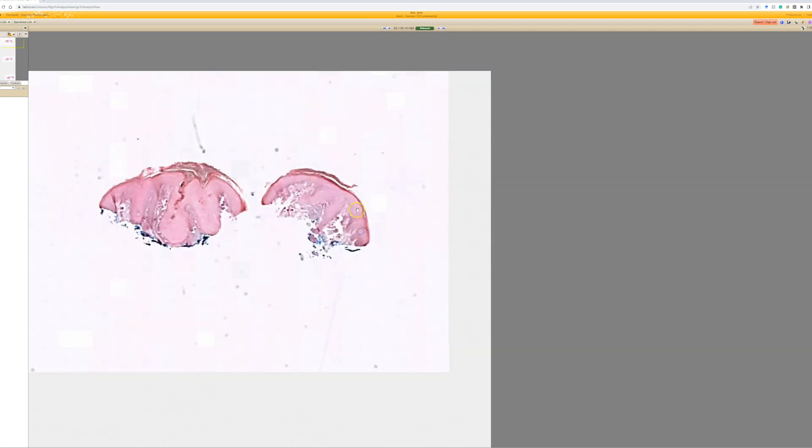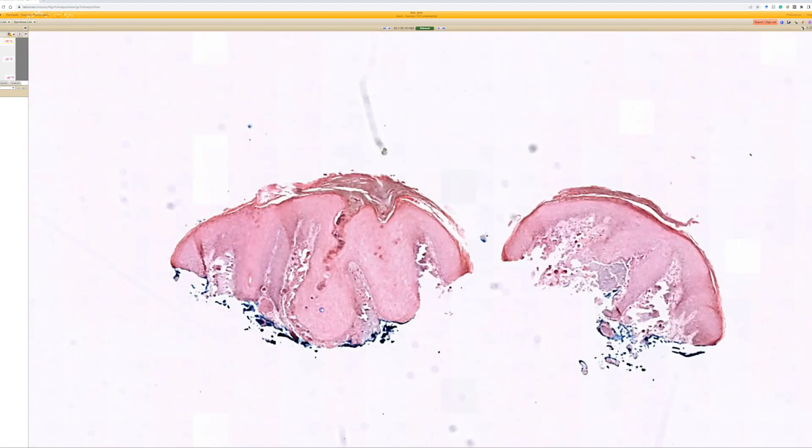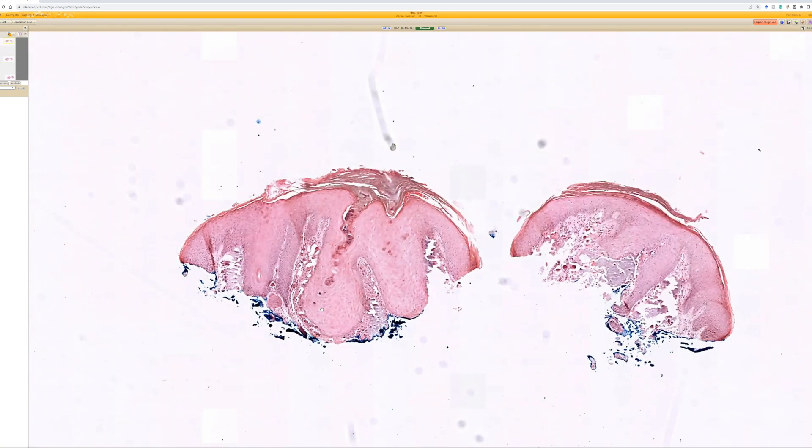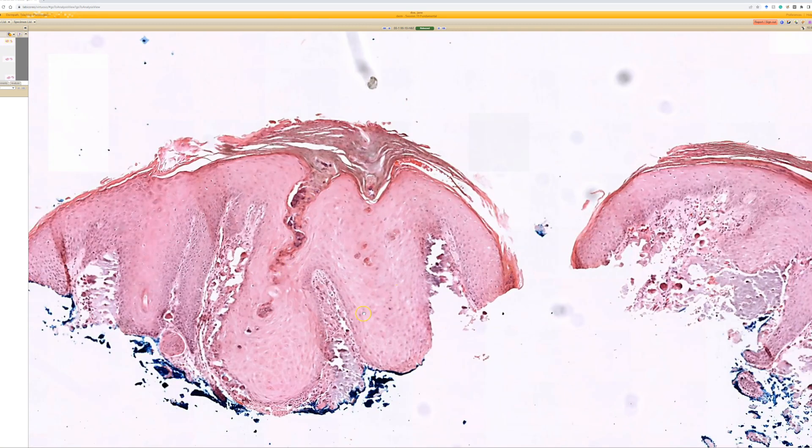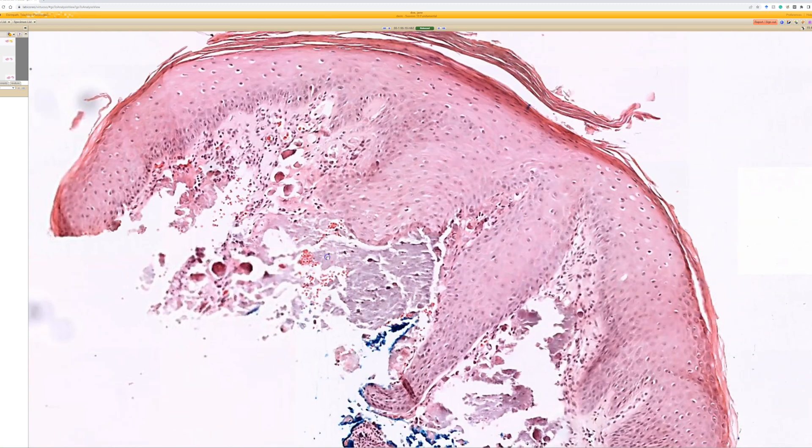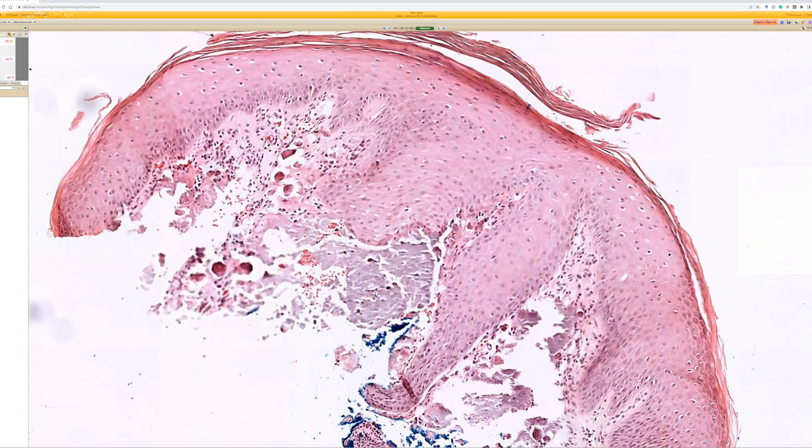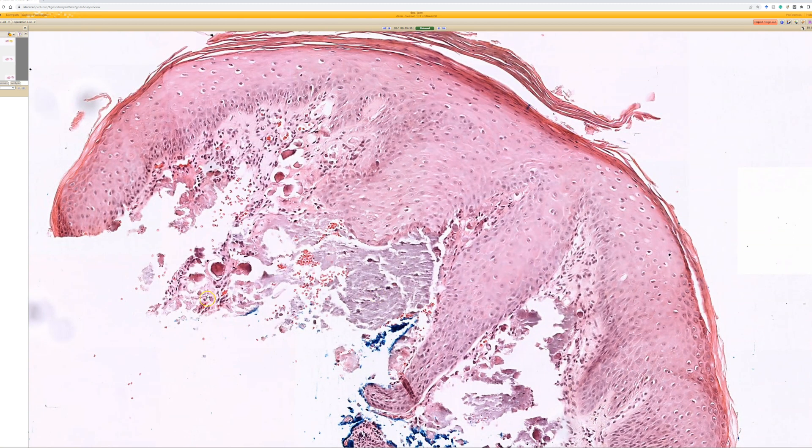This is an epidermal hyperplasia. This was a little papule on a child's eyelid or right around the eye of a kid, and there's epidermal acanthosis. Then right in the dermis underneath, there are fragments of calcification, little nodular aggregates of calcium.